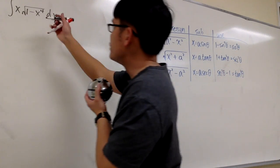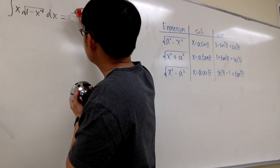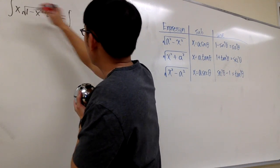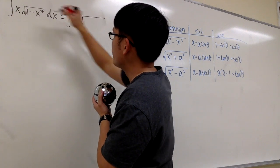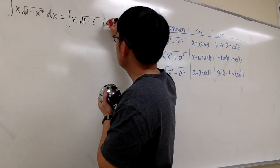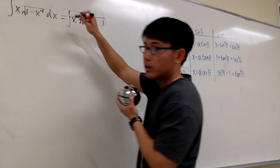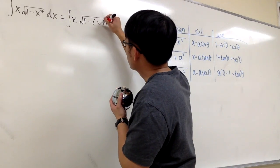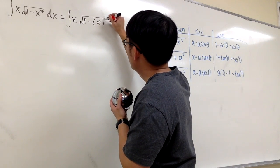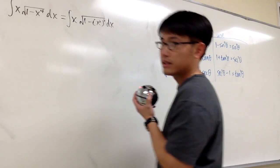The change is: we can look at this as the integral of x times square root of 1 minus — instead of x to the fourth power, let's look at this as x squared, and then squared, dx.